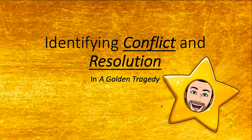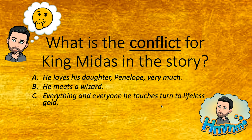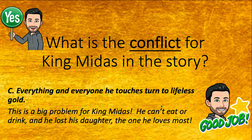All right, now let's see how we do identifying conflict and resolution in A Golden Tragedy. Here's a little quiz for you. What is the conflict for King Midas in the story? A: He loves his daughter Penelope very much. B: He meets a wizard. C: Everything and everyone he touches turn to lifeless gold. Hmm, what was the conflict? Yes — C: everything and everyone he touches turn to lifeless gold. This is a big problem for King Midas. He can't eat or drink and he lost his daughter, the one he loves most.